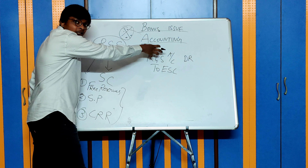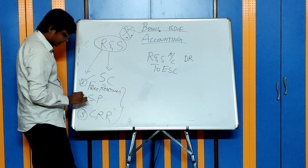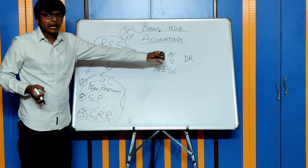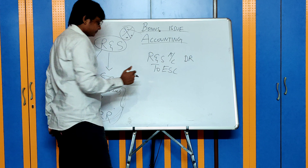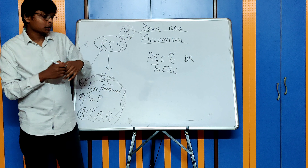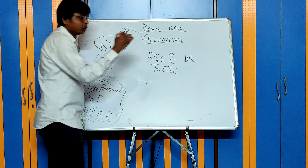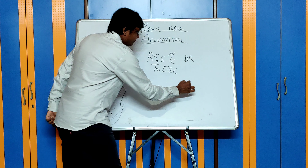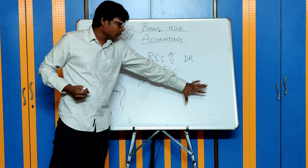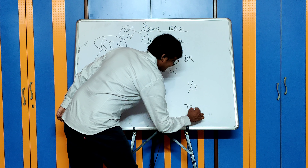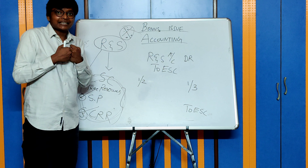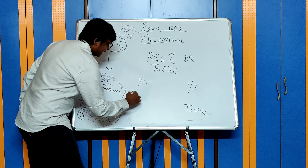When I say reserves and surplus, can I use all the reserves? No. Section 63 says you can use only three reserves: first, free reserves; second, securities premium; third, capital redemption reserve (CRR). Only these three reserves can be used for issuing bonus shares. Therefore, instead of debiting reserves and surplus, you will either debit free reserves or general reserve, securities premium, or CRR — or a combination of these three — to match the amount required.